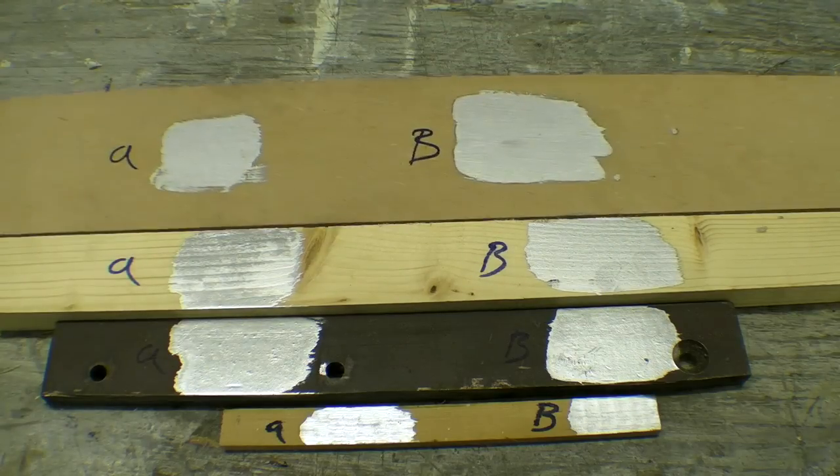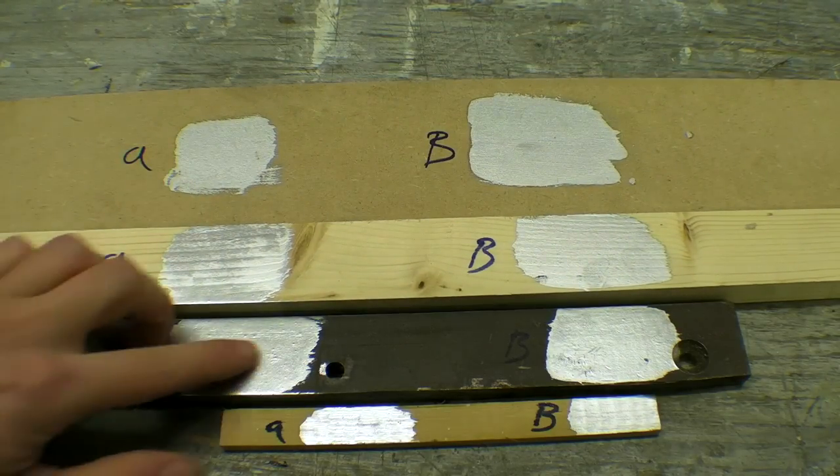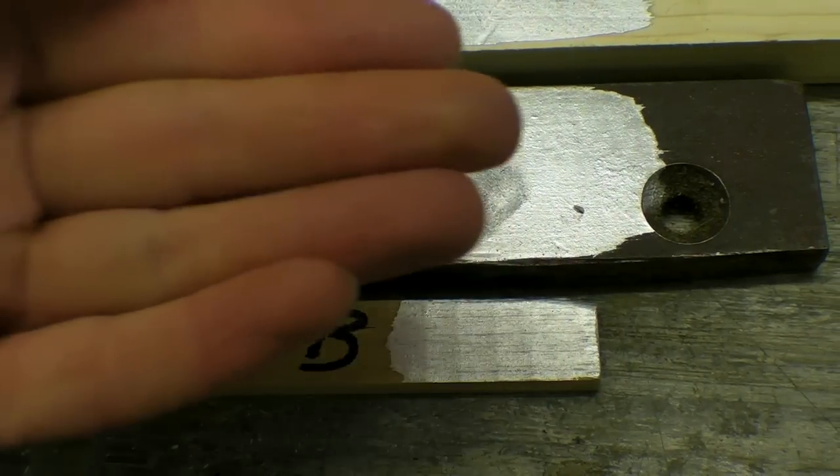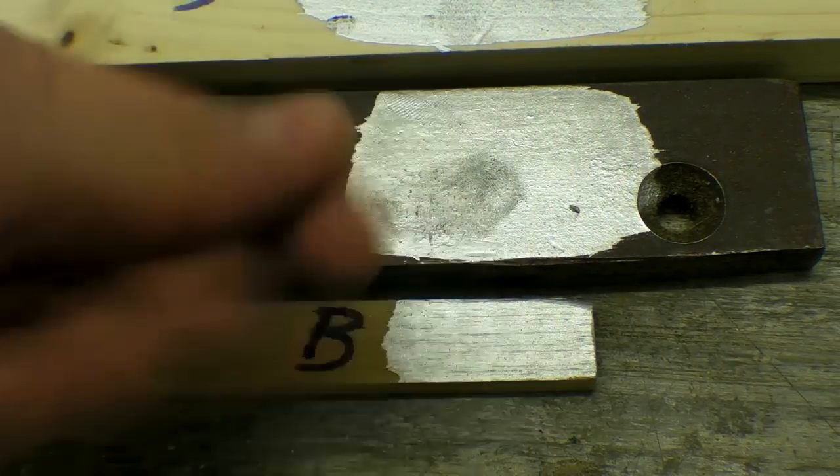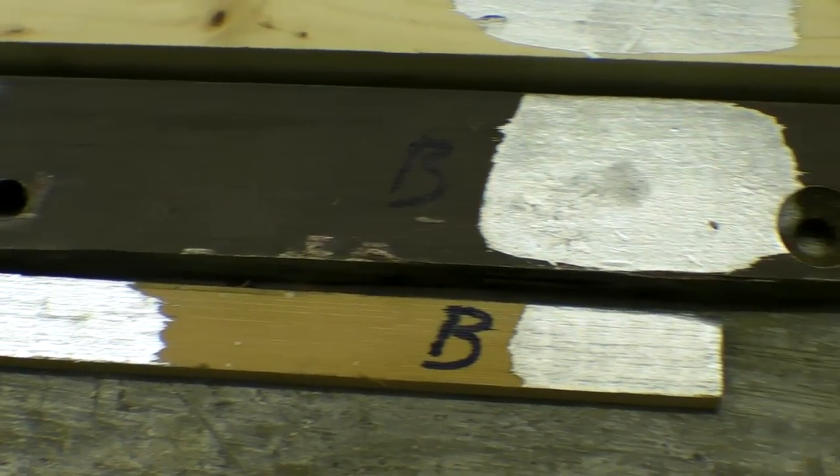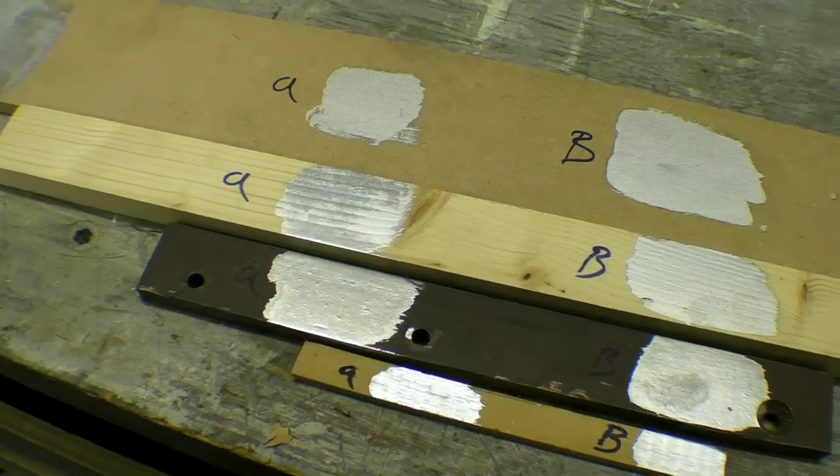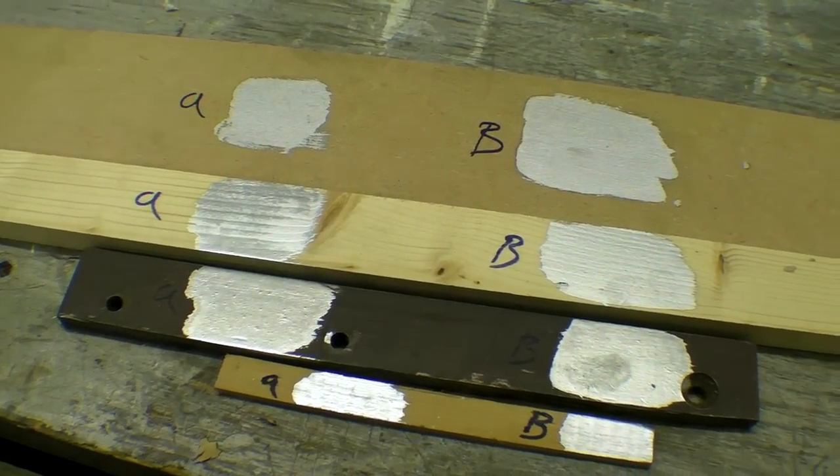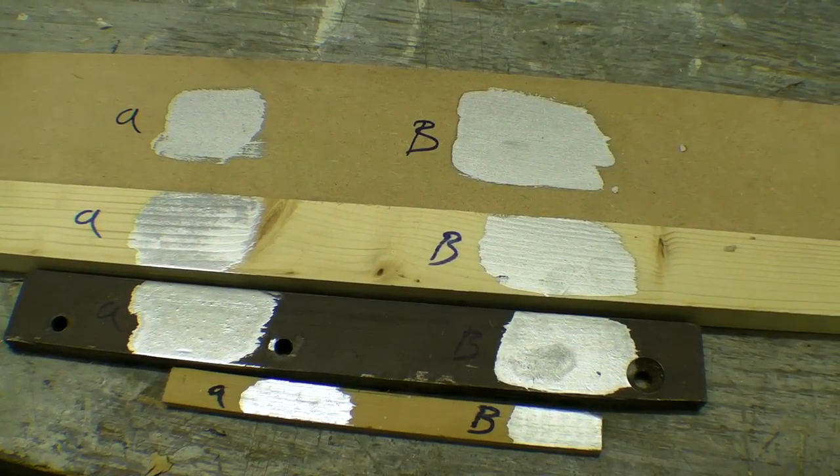So after 24 hours paint B hasn't dried yet. In terms of their color they look very similar, in fact the paint which I hadn't tampered with seems to be a lot better. I'm going to give it another 24 hours and see what happens.